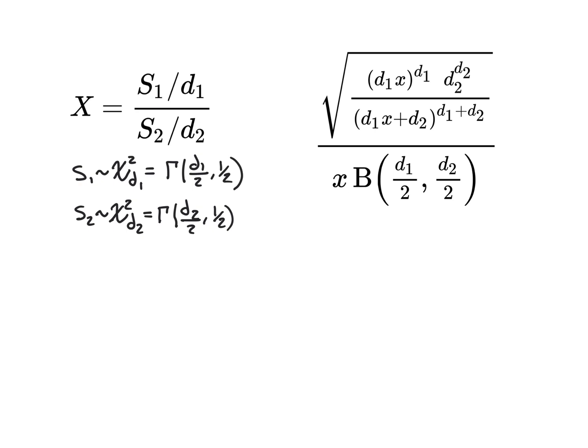So s1 is chi-squared distributed with d1 degrees of freedom, and s2 is chi-squared distributed with d2 degrees of freedom. We're going to derive this for general d1 and d2 — they are natural numbers, 1, 2, 3, 4, etc. Our derivation holds true no matter what d1 and d2 you pick. Importantly, s1 and s2 are assumed to be independent chi-squared random variables.